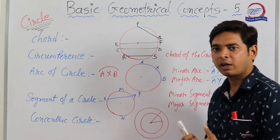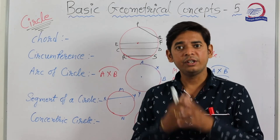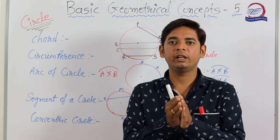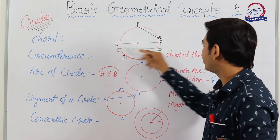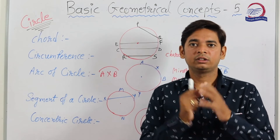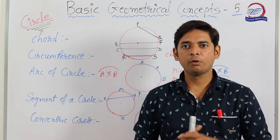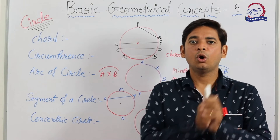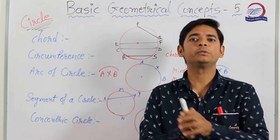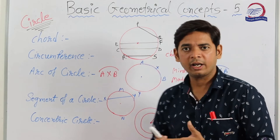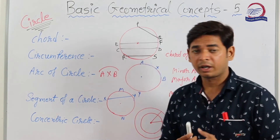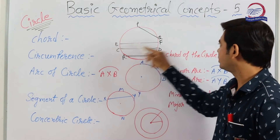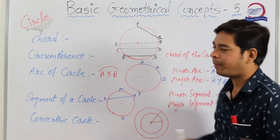EF and PQ are also chords. You might say EF is a diameter — yes, it is a diameter, but it can also be called a chord because all diameters have their end points on the circle. So all diameters are chords, but not all chords are diameters. RS, CD, and PQ are chords but not diameters because they do not pass through the center of the circle.